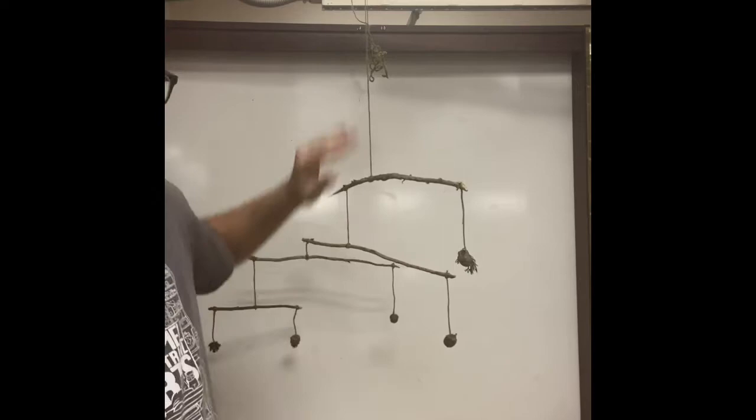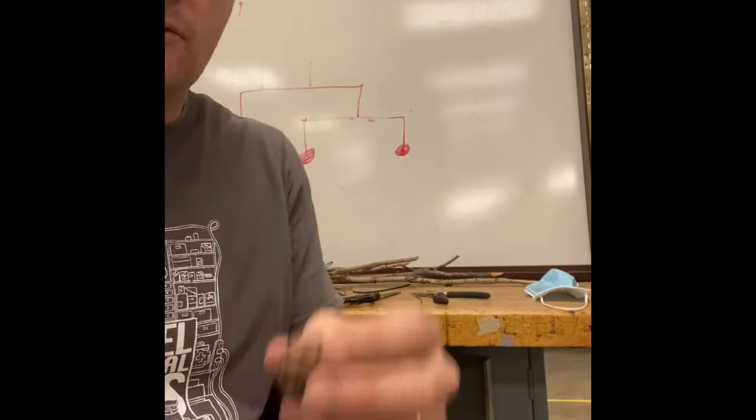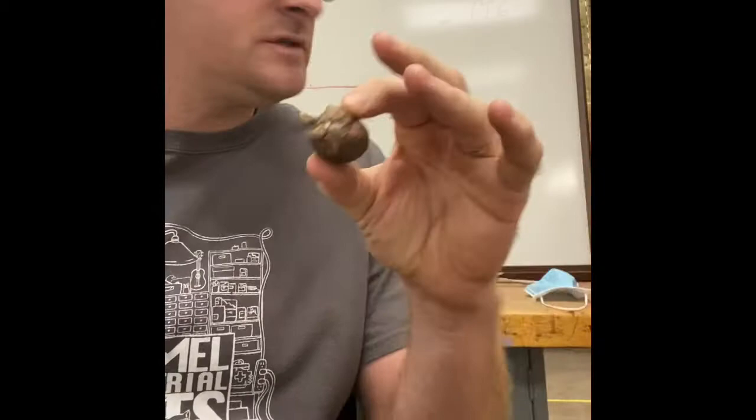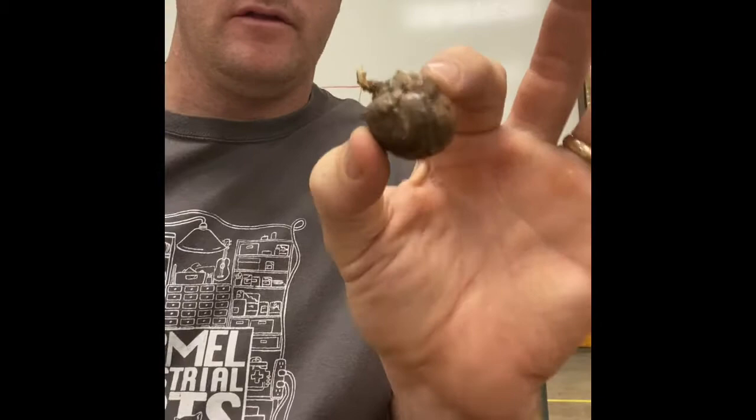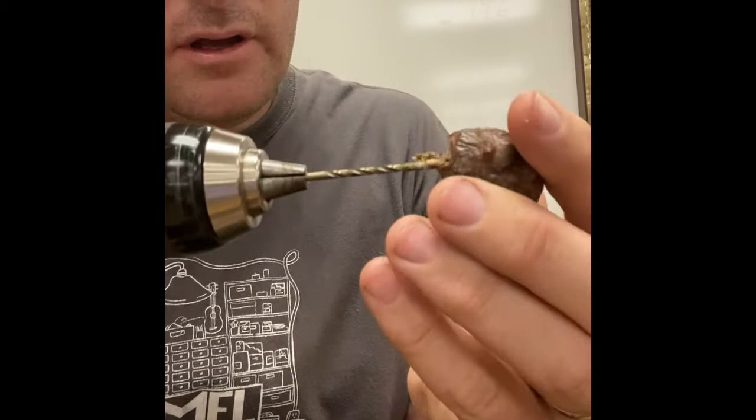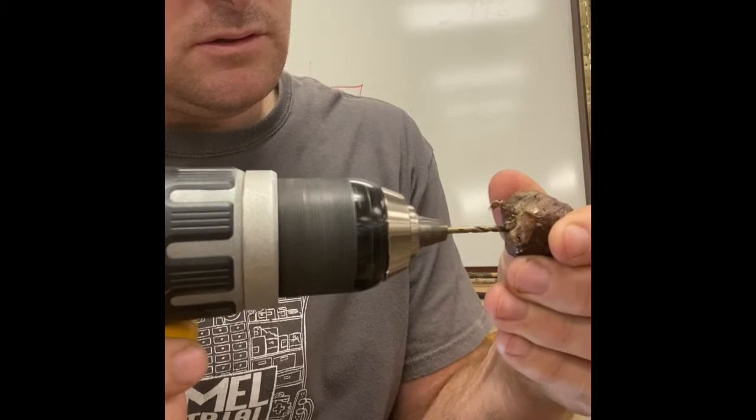All right, so what I'm doing first is I'm taking my pine cones and my little tubers that I find from the trees, and I'm gonna take them and drill a little hole in them just like this with a little hand drill. You don't have to have a hand drill to do this, this is just the way that I'm gonna do it.